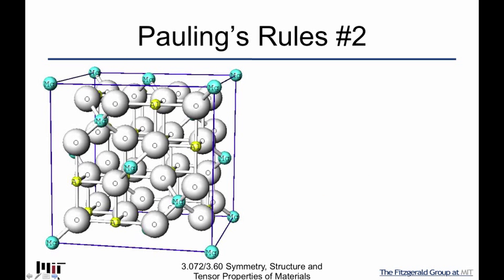Let's look at a little more complicated structure. This is a spinel. And we have magnesium, aluminum, and oxygen in here. And you see that here. Magnesium, aluminum, oxygen. And there's different coordination.